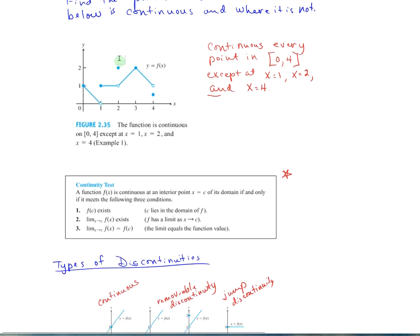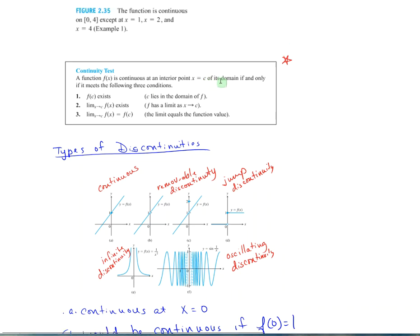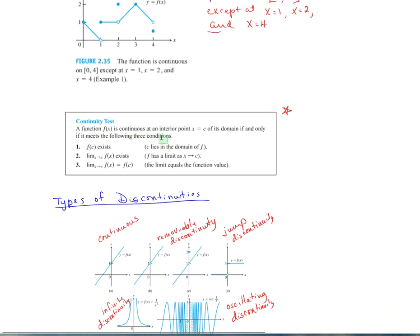A continuity test: a function is continuous at an interior point x equals c of its domain if and only if it meets the following three conditions. f of c exists, so that number is in the domain of f. You wouldn't have a hole there. The limit as x approaches c of f of x exists.